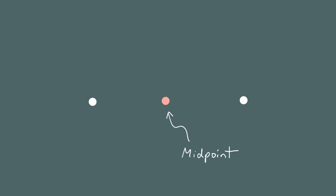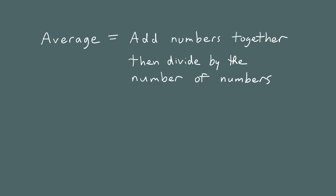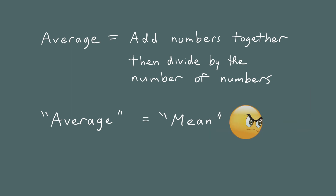But before we learn how to find the midpoint, let's do a quick review about averages and means. Recall that to compute the average of some numbers, you simply add them together and divide by how many numbers there are. The average is also called the mean — and in this context, the word mean doesn't mean like 'I am mean to people.' It's a different meaning of this word and it refers to the average.